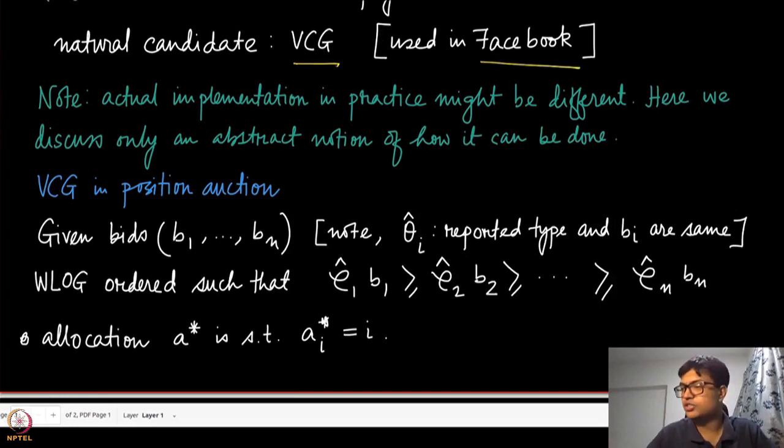Let us consider the VCG in position auctions. What is given in this case? Each of these agents are asked for their bids, that how much their true values are. The θᵢ's are essentially for their advertisements. The bidders reveal, or the advertisers reveal, these Bᵢ's, and Bᵢ is nothing but the θᵢ hat as we have used the notations elsewhere. Now, the bidder numbers are unimportant. All that matters is essentially how we are going to sort them. Without loss of generality, let us assume that they are numbered in the way such that they are sorted according to their values of ρᵢ hat times Bᵢ. ρ₁ hat times B₁ is going to be the first position, the topmost position. The second agent has the second highest value of ρ₂ hat times B₂, and so on.